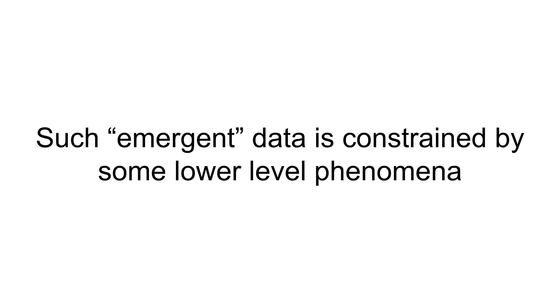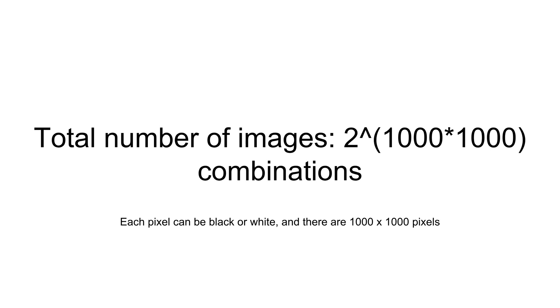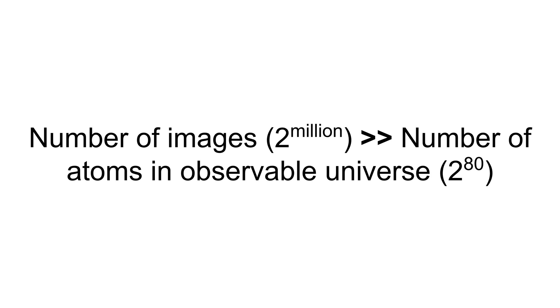To understand this, imagine there is a 1000-by-1000 pixel image which is black and white, and every pixel can take either black or white. Now there are 2 raised to power 1,000,000 such images, because each pixel can either be black or white and there are 1,000,000 pixels. The interesting thing about this is that the number of images for even such a simple scenario — 2 raised to power million — is much much greater than the number of atoms in the observable universe.